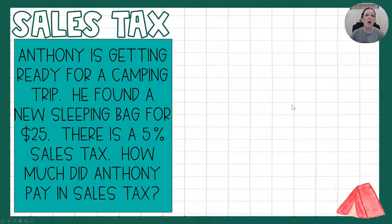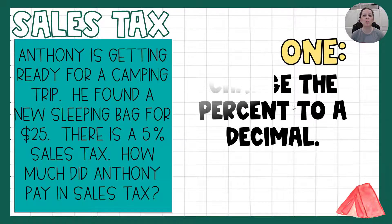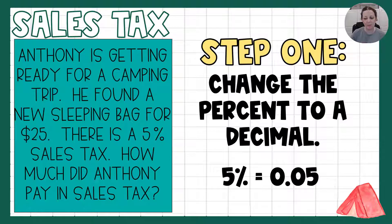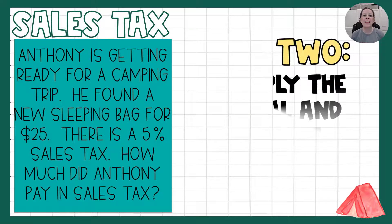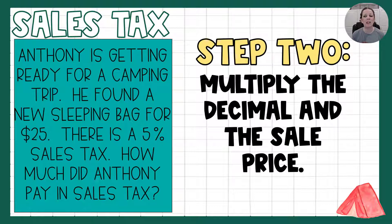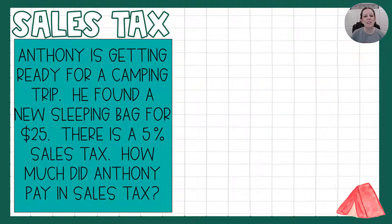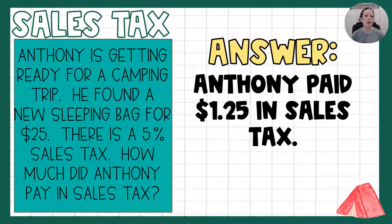Let's dive right in. Our first problem says Anthony is getting ready for a camping trip. He found a new sleeping bag for $25, but there is a 5% sales tax. How much did Anthony pay in sales tax? Step one is to change the percent to a decimal — 5% as a decimal is 0.05. Step two is to multiply that decimal by the sale price: 0.05 times $25, which gives us $1.25 in sales tax.